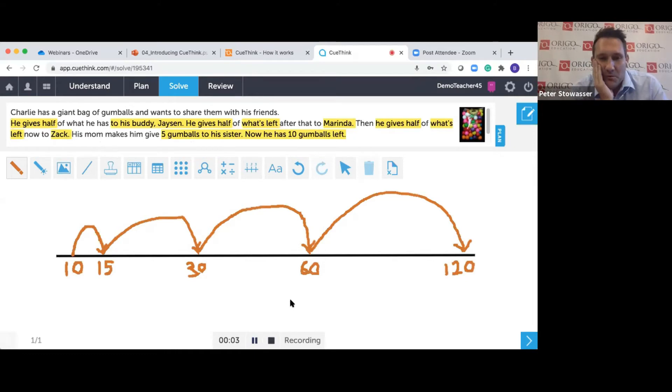This was a real doozy of a problem. To solve it, we figured out that we needed to backtrack and we thought a number line was a nice way to do it. We started at 10 because that's how many gumballs we had left. Then we worked backwards through the problem. Rather than taking away, we had to add.